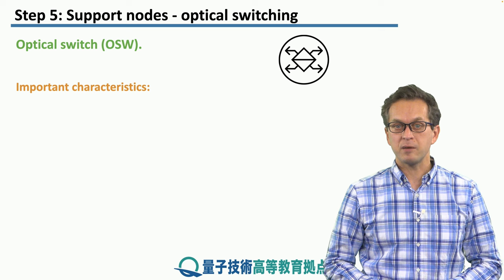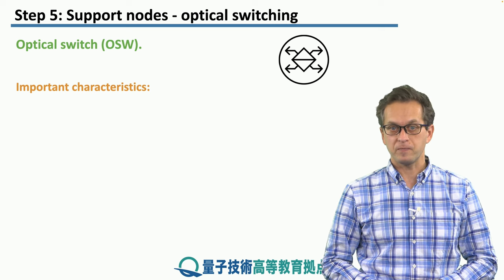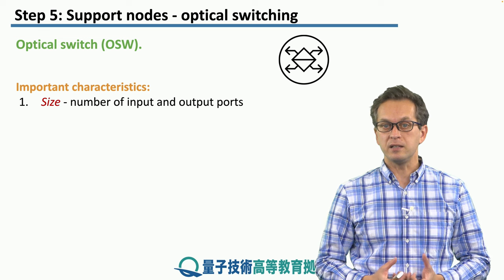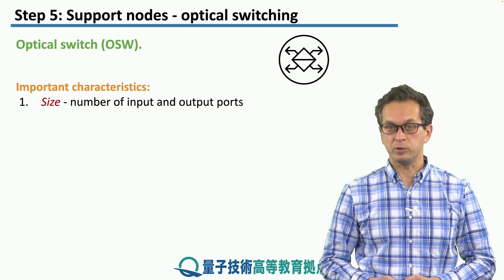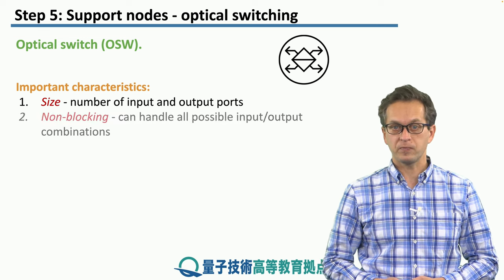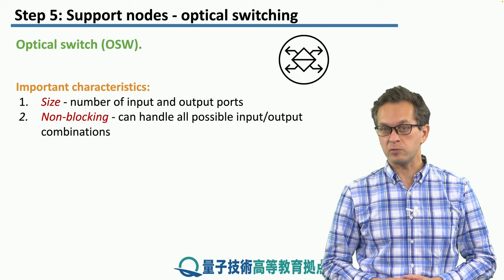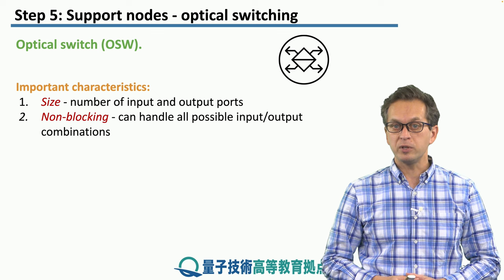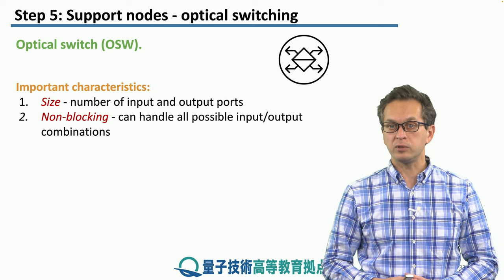Let's think about some important characteristics of optical switches. Number one is the size — the number of input ports and the number of output ports. What's very important is whether the switch is blocking or non-blocking. An optical switch is non-blocking when it can handle all possible input and output combinations.